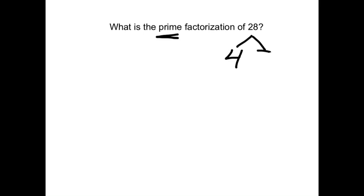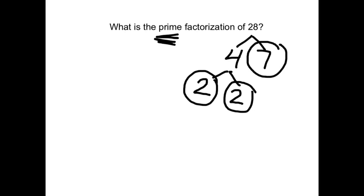So we've got 4 times 7. Now we circle 7 because it's prime. That's what we're looking for is the prime numbers. 4 is composite, so we have to keep going. And 4 can be multiplied from 2 times 2. 2 is prime because the only way you can make a 2 is 1 times 2.